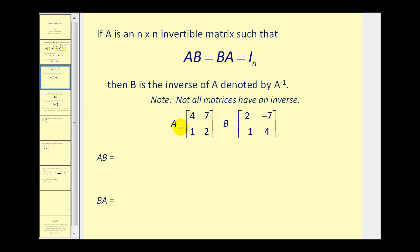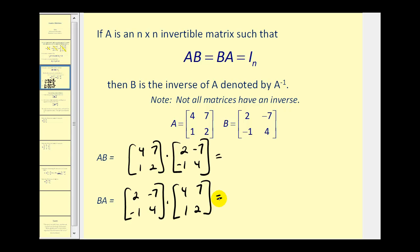Let's take a look at what happens when we find the product of these two matrices — first A times B, and then B times A. Remember, usually matrix multiplication is not commutative. We're going to use the calculator because we've already covered how to multiply by hand.